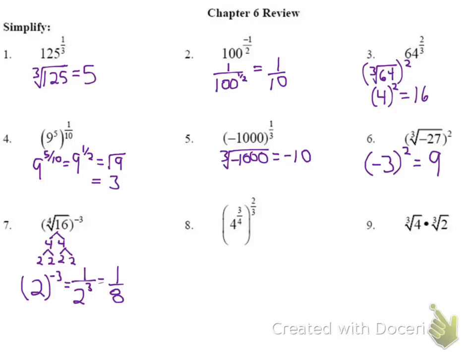Number 8: we have 4 to the 3/4, to the 2/3. Just like number 4, we multiply the two exponents: 3/4 times 2/3 gives 6/12, which simplifies to 4 to the 1/2. The 1/2 exponent means it's the square root of 4, so our answer is 2.